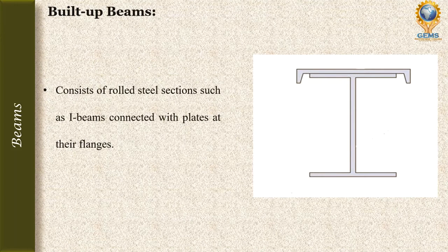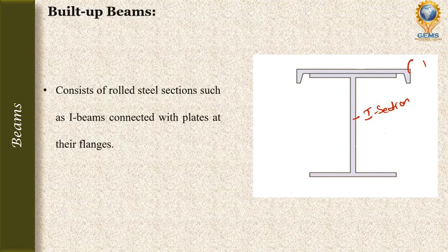Built-up beams consist of rolled steel sections such as I-beams connected with plates at their flanges. As seen in the diagram, it is an I-section, and at the flange we have a plate that is connected to it. It is two sections connected to form one section — that is called a built-up beam.